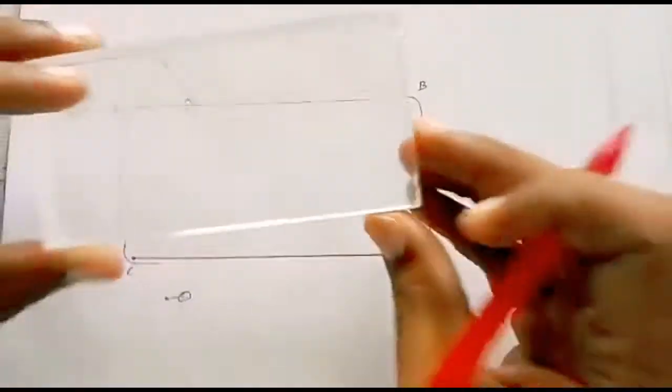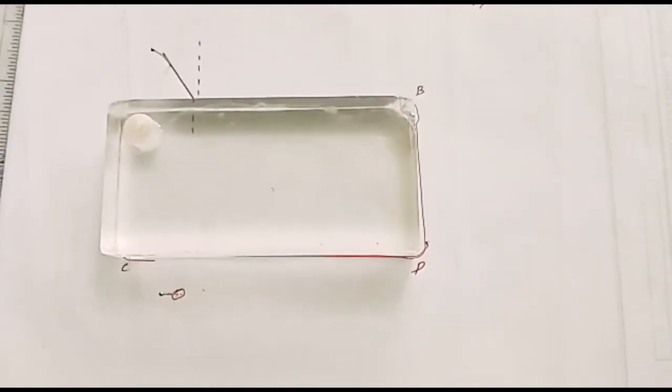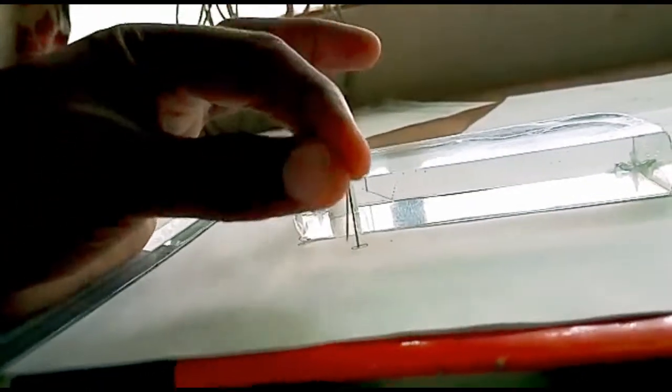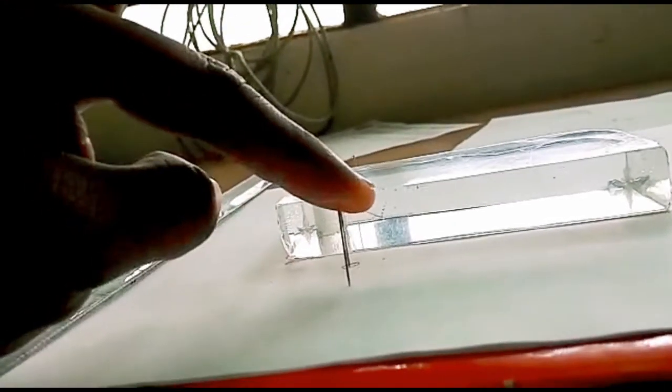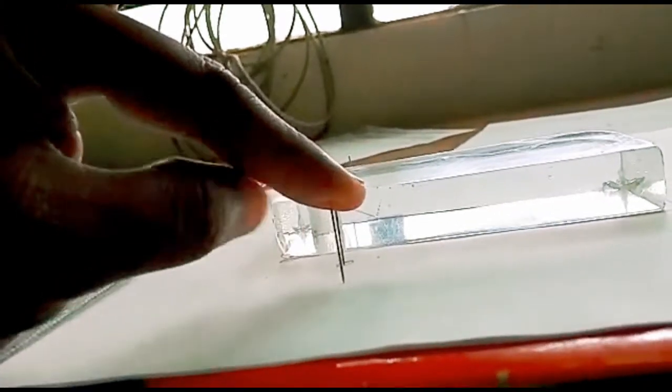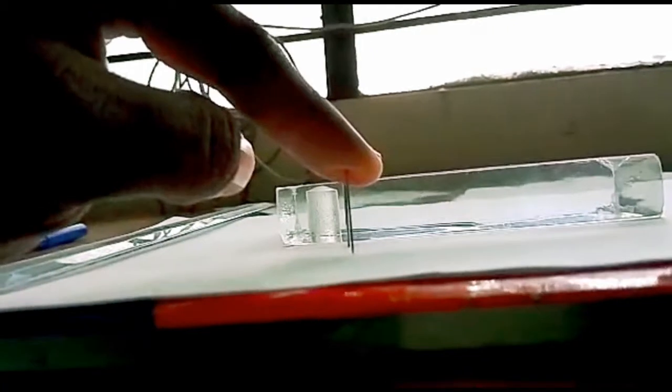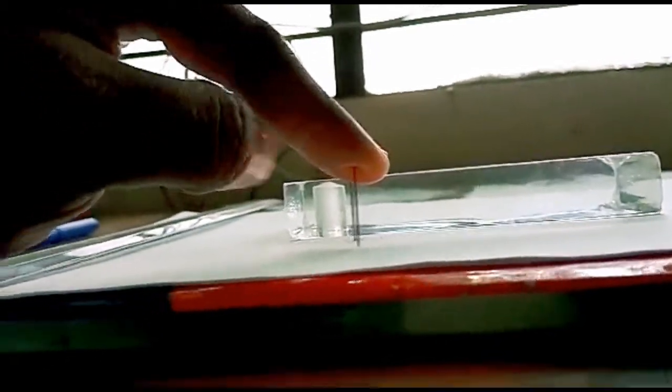I will take the third pin. Now what I am going to do here, have a look. I am taking this pin and trying to coincide it with the two other pins. The exact location where it is coinciding with the two other pins. Now you can see that I can't see the second pin and the third pin. This exact point is the angle of emergent ray.